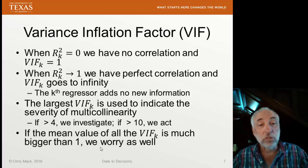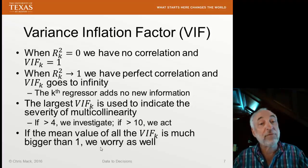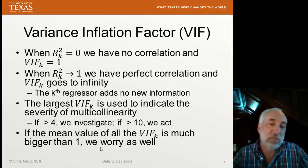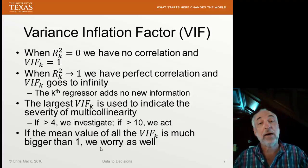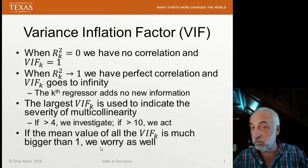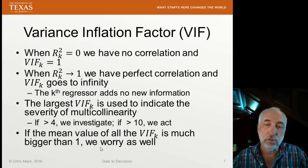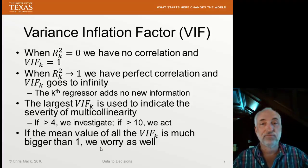The other thing we can do is look at all of these variance inflation factors and find the mean value — the average of all of them. If the average starts getting large, much bigger than 1, we worry as well, and we might think about whether our model is useful in terms of interpreting these coefficients without somehow mitigating this multicollinearity.